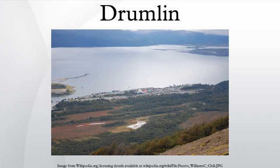A drumlin, from the Irish word 'dróimnén', first recorded in 1833, is in the classical sense an elongated hill in the shape of an inverted spoon or half-buried egg, formed by glacial ice acting on underlying unconsolidated till or ground moraine.